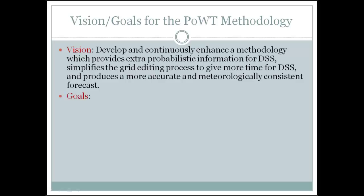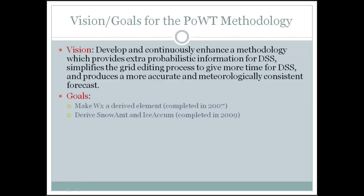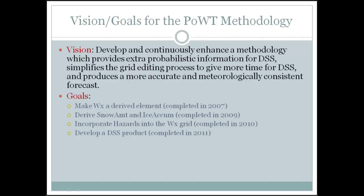The first development milestone was making weather a derived element, because the weather grid is an ugly string grid in GFE terminology. In 2009, having extra information through the methodology allowed deriving snow amount and ice accumulation. Then I brought hazard grids — like severe thunderstorms and dense fog advisories — into the weather grid automatically, and developed a DSS product that's been running experimentally for a couple of years.